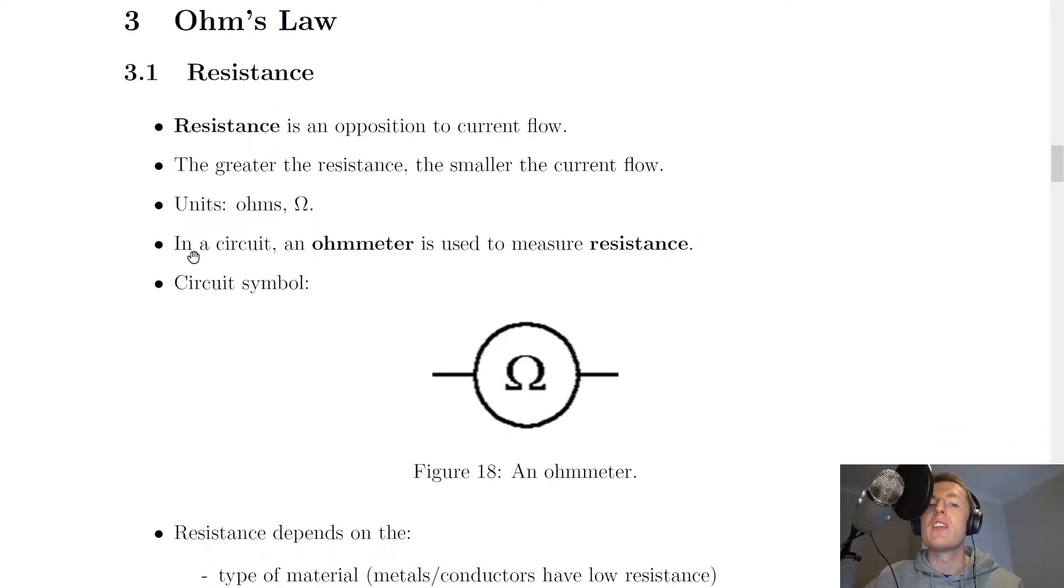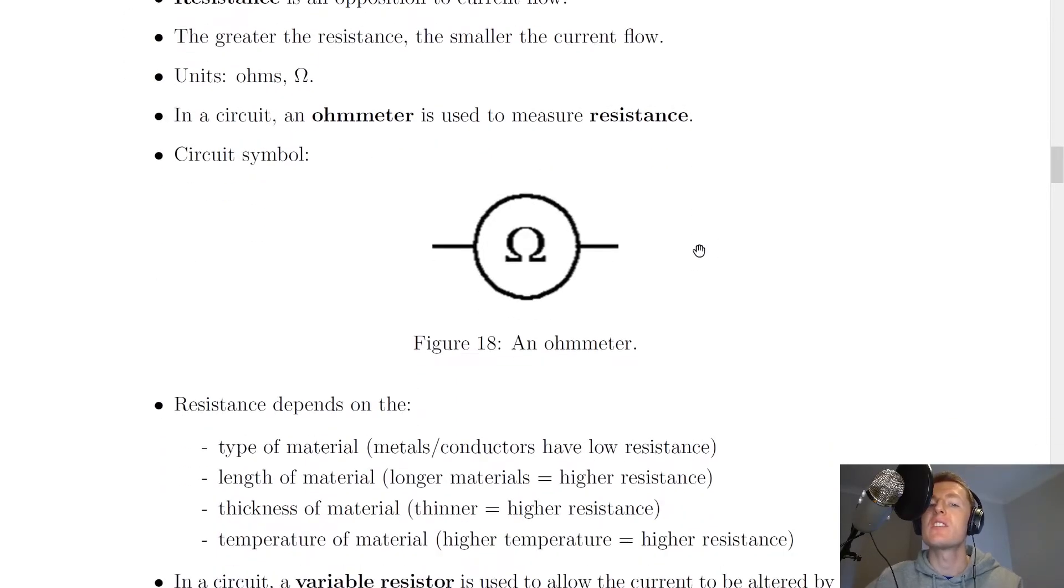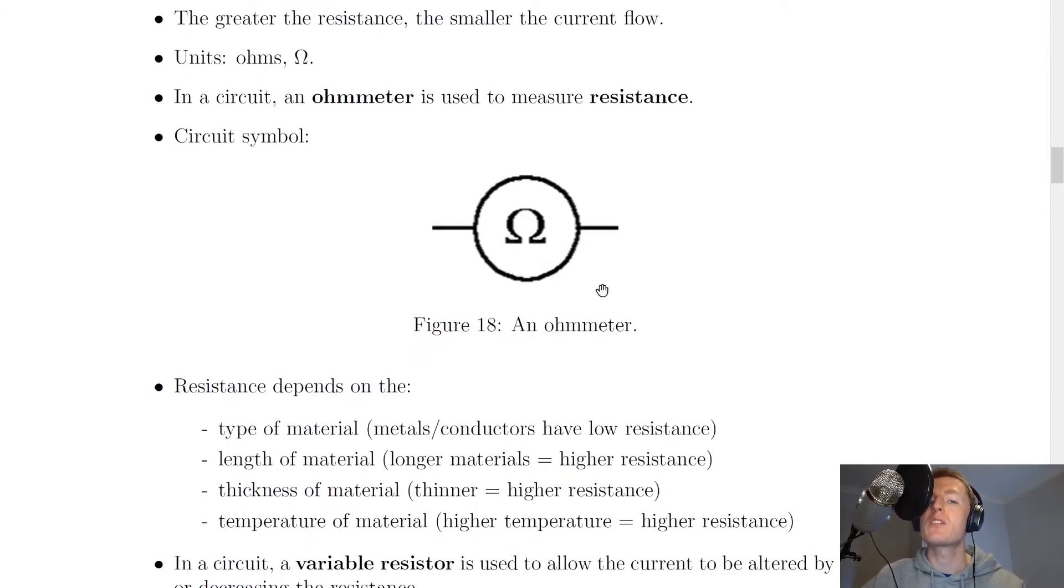The units of resistance are this Greek letter omega, which is ohms. In a circuit we use an ohmmeter to measure resistance, and this is the circuit symbol for an ohmmeter - it's a big circle with the omega symbol in there for ohms.